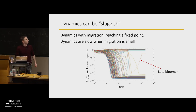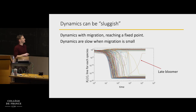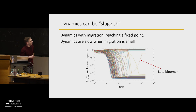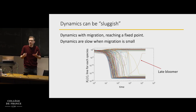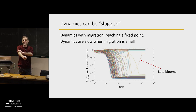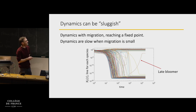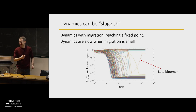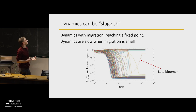Let me go back to a figure I showed you — this is a situation where the dynamics of the system reach a fixed point. But I want you to look at the time scale. In natural units, order one would be a generation time for microbes to multiply. The time to reach the fixed point here is actually extremely long — thousands or even tens of thousands of generation times.